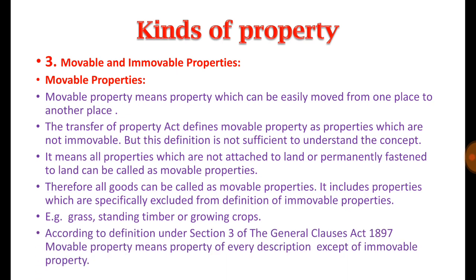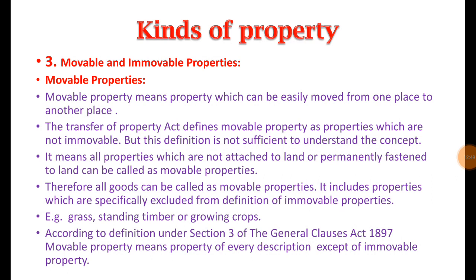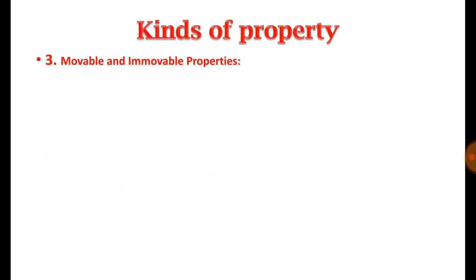Section 3 of the General Clauses Act 1897 defines movable property as property of every description except immovable property. In simple words, movable property means property which can be moved from one place to another, while immovable property is property which cannot be moved from one place to another without disturbing its original shape.